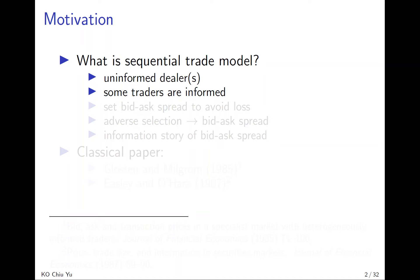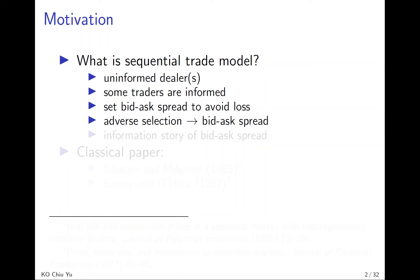For dealers to avoid making losses, they need to set a bid-ask spread — that is, they set the buying price and selling price differently. In other words, because of adverse selection, meaning some people have more information than others, they need to set different prices for buying and selling.